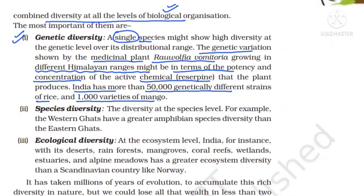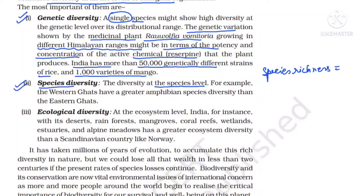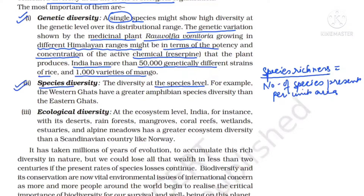The second type of diversity occurs at the species level, known as species diversity. It includes two things: species richness and species evenness. Species richness means the number of species present per unit area. Evenness means the numbers of each species should also be even, so that if one or two members die, species extinction does not happen.